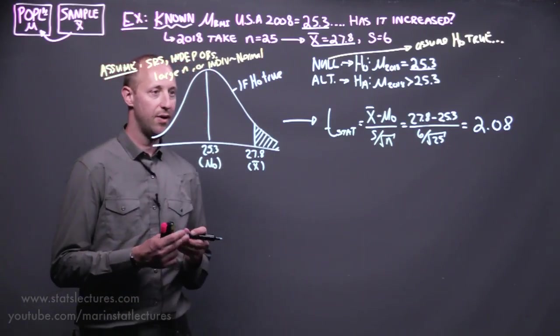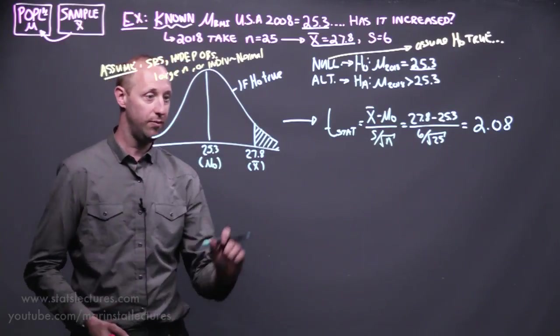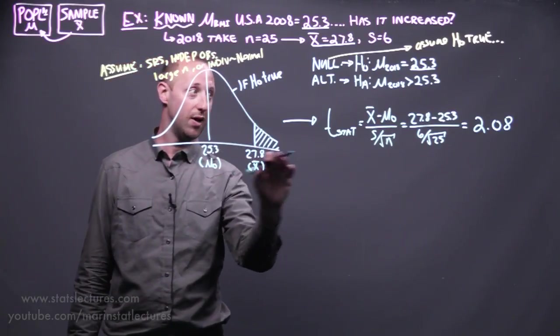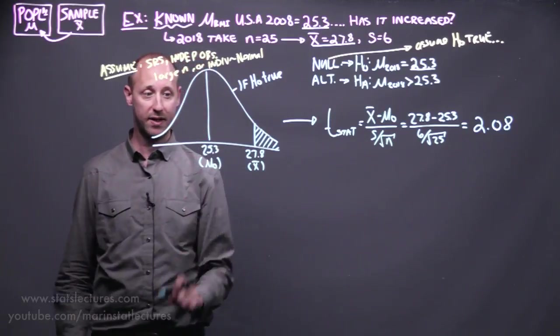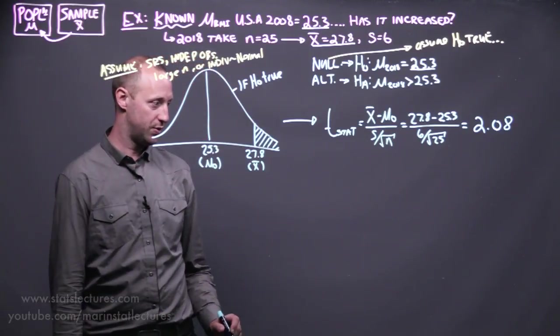If we carry through and work this out, we can see that the estimate that we got is 2.08 standard errors above what we'd expect if the null hypothesis is true.